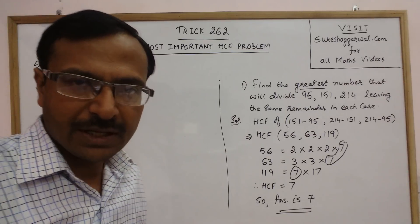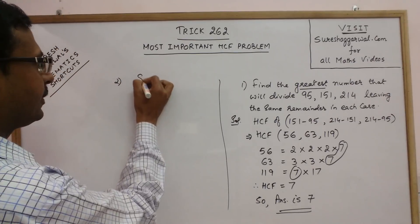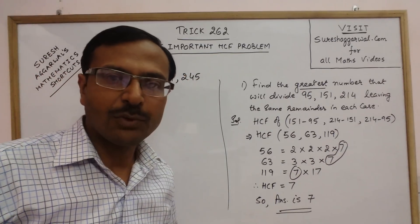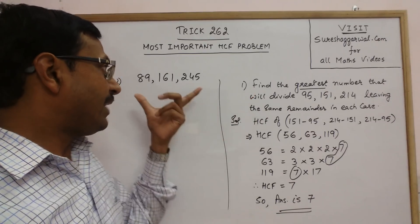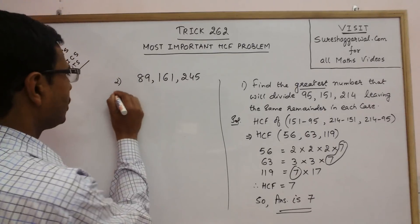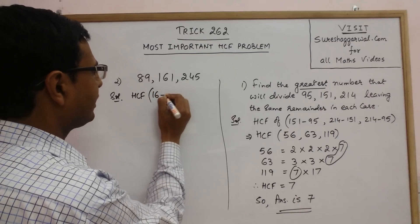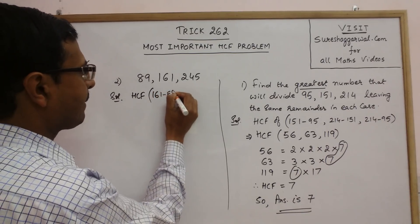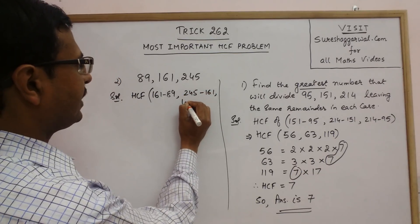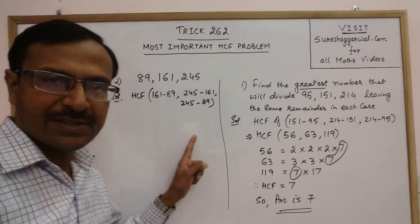For illustration purpose, I am taking one more example of three numbers. This time, I am taking 89, 161 and 245. The statement remains the same. We have to find the greatest number which divides these three numbers leaving the same remainder in each case.